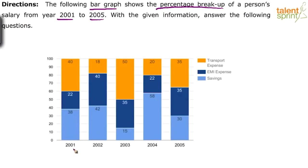You can see there are five bars given here, 2001 to 2005 — 2001, 2, 3, 4, 5 — and it shows the percentage breakup of a person's salary. Whatever be the person's salary in each year, the breakup of that salary in terms of percentage is given to us. And you can see each bar has got three sections. The first one is 38%, then we have 22% and 40%.